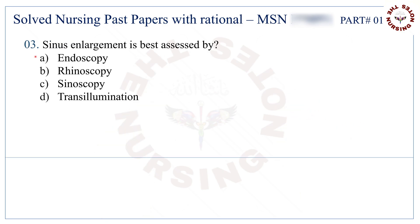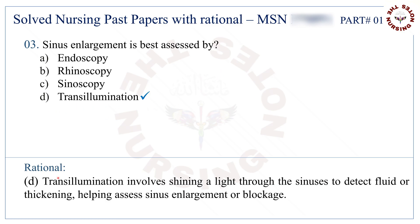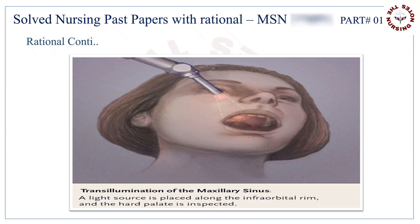Question number 3: Sinus enlargement is best assessed by. The correct answer is D — transillumination. This is the transillumination procedure.